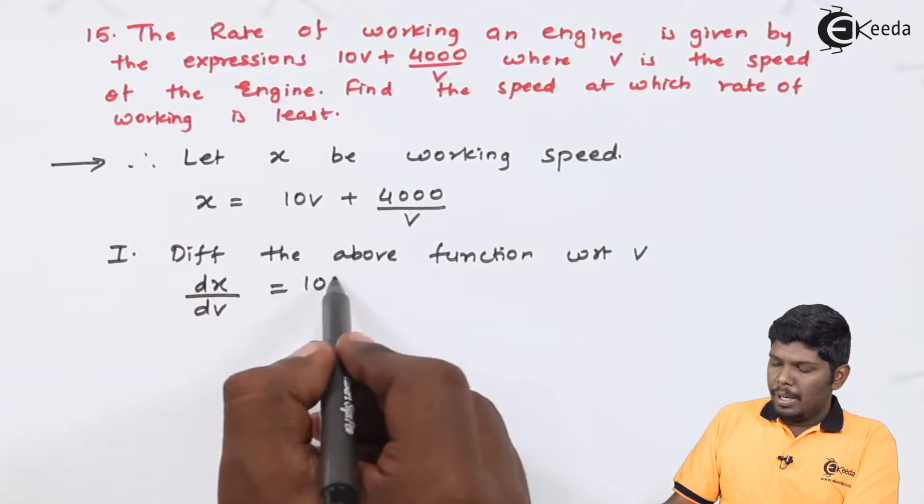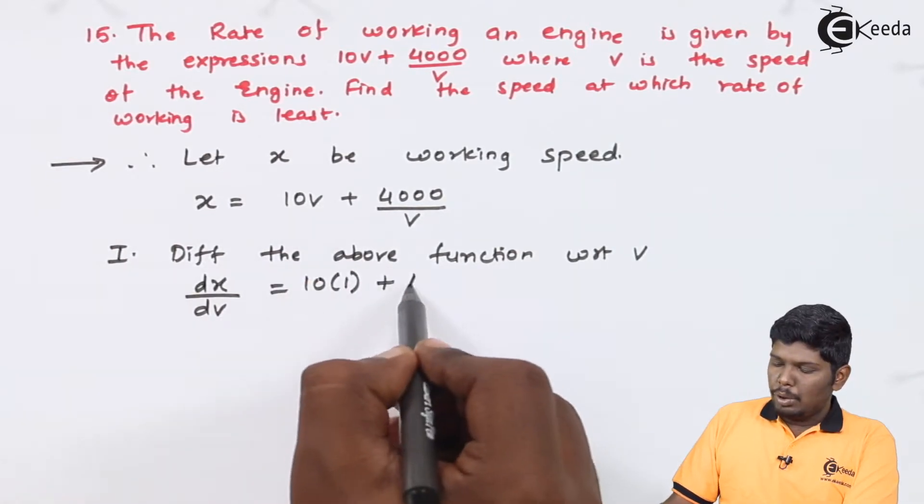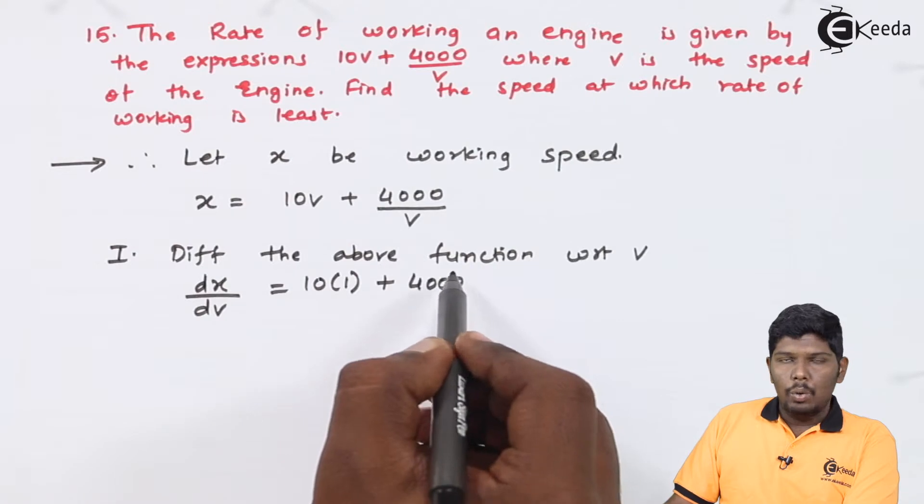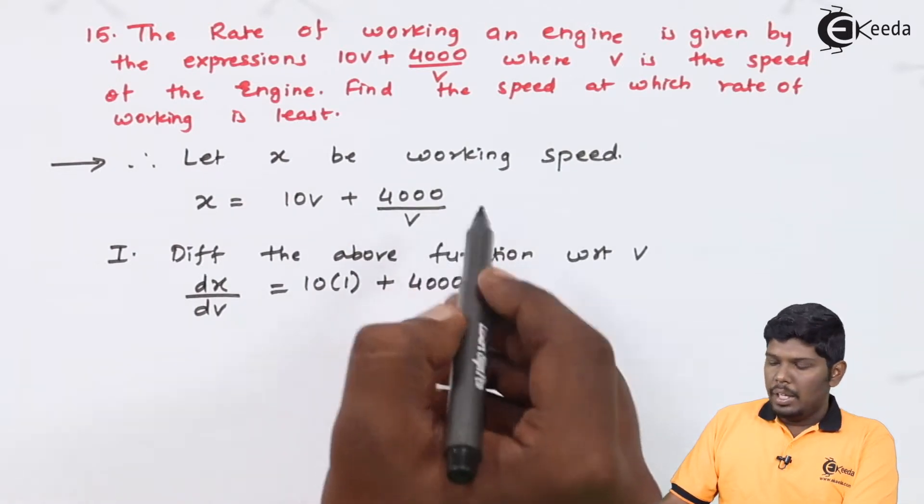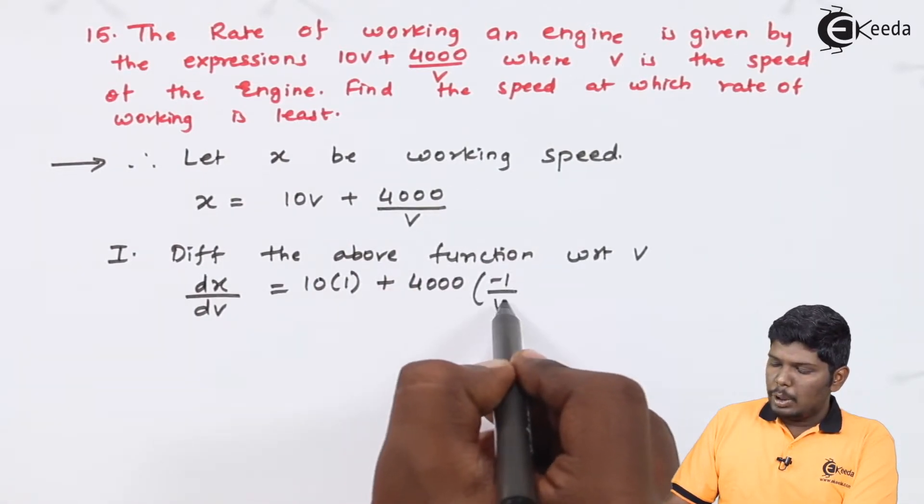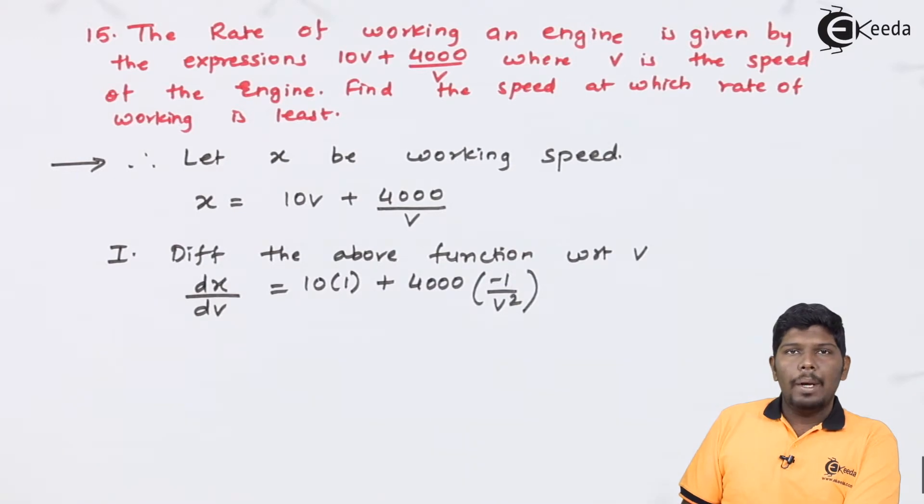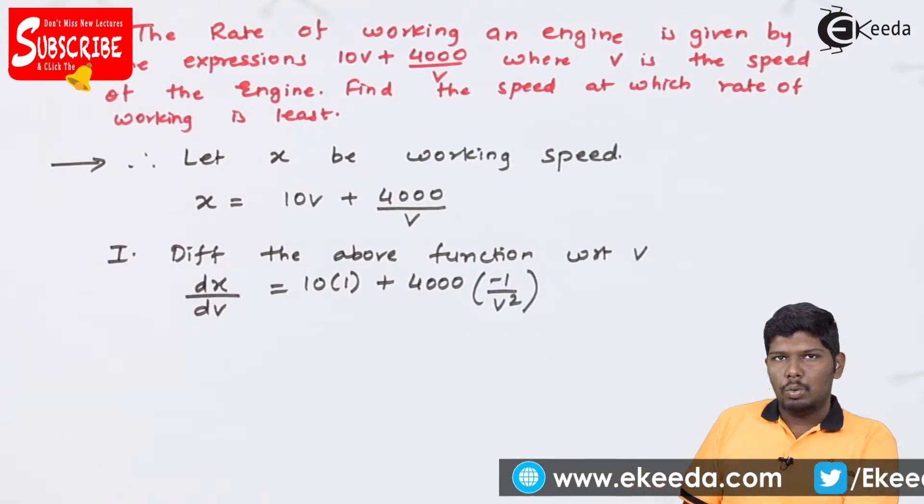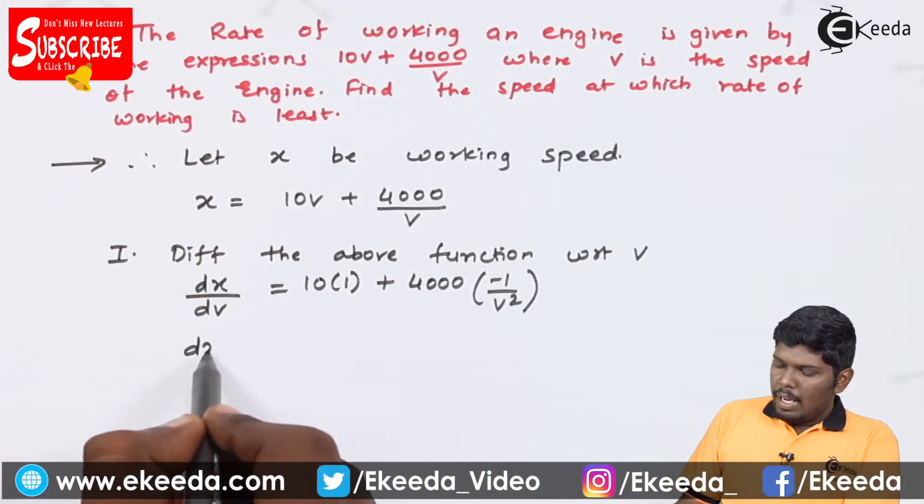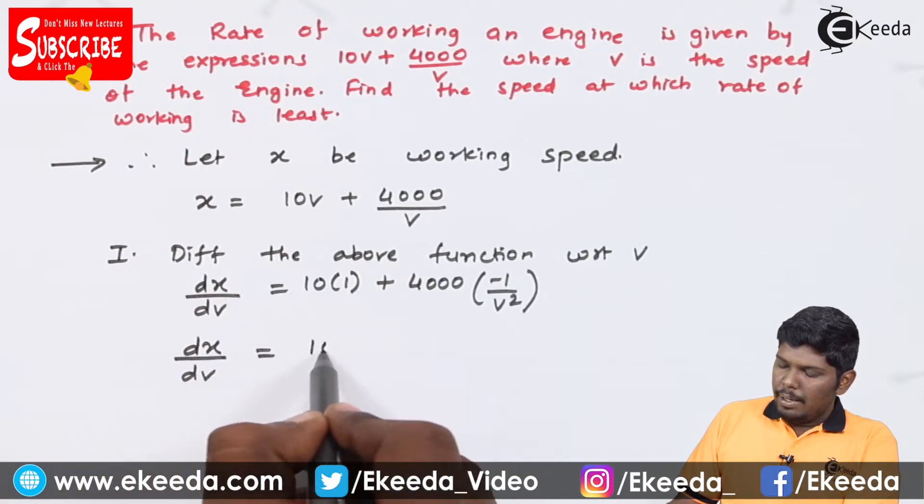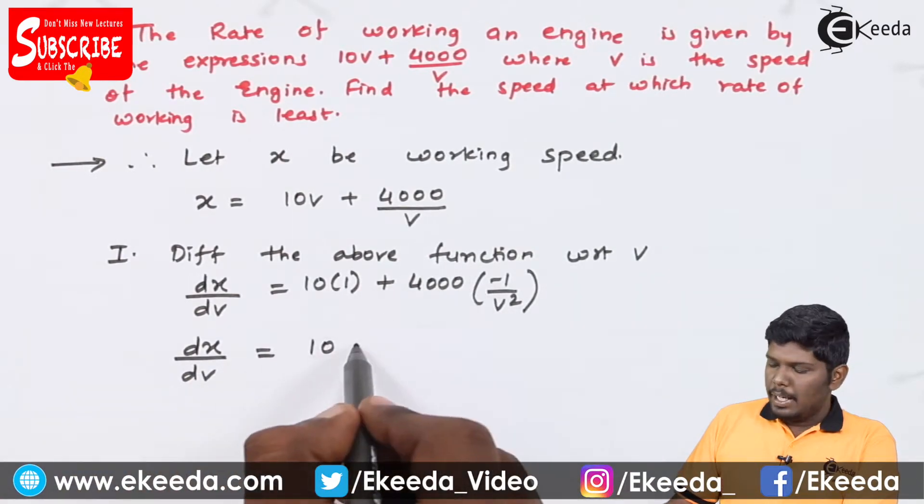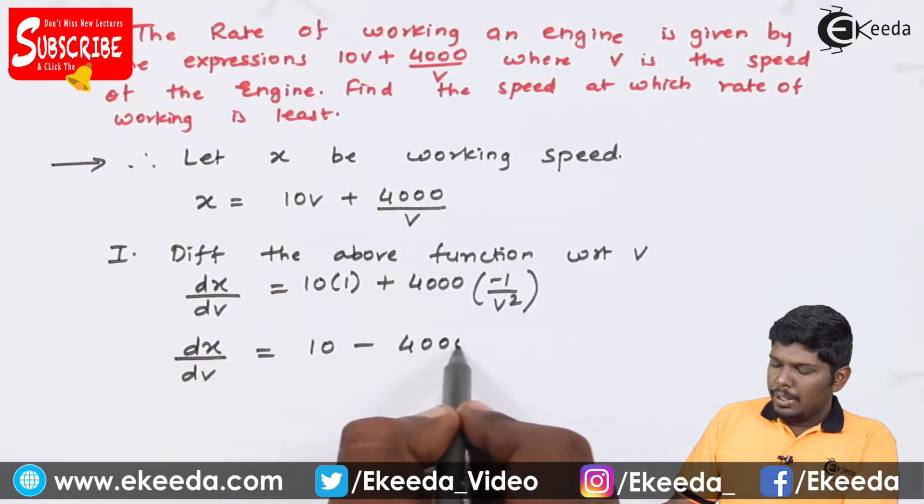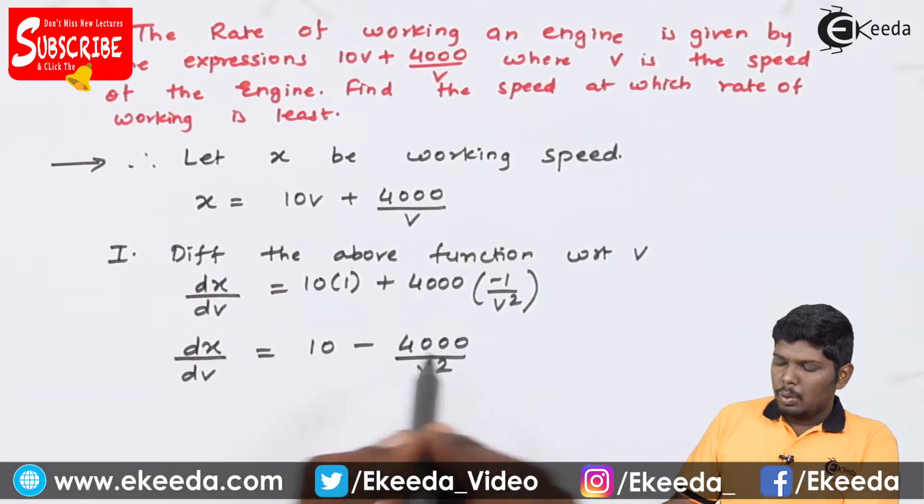This will give you minus 1 upon V square, as derivative of 1 by X gives minus 1 upon X square. We have dX by dV is equal to 10 minus 4000 upon V square.